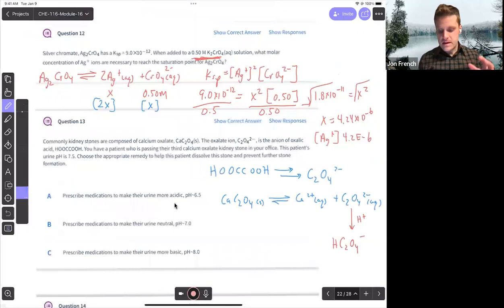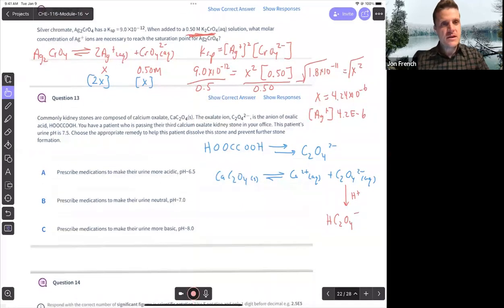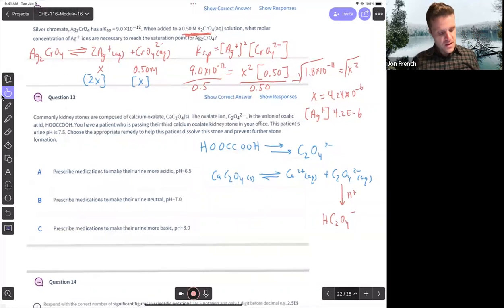All right. Back to 13. So, 13, right? Calcium oxalate. I talked about this on Sunday night and in office hours today. So, anytime you eat spinach, you know, that like weird feeling on your teeth after you eat spinach, that weird film, there's a lot of oxalate in spinach. And so, that's actually like calcium oxalate precipitating on the surface of your teeth.